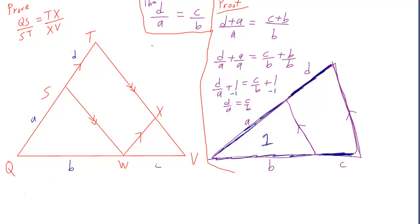So we can just start to set up that d over a is equal to c over b. So I'll write st over qs is equal to wv over qw.